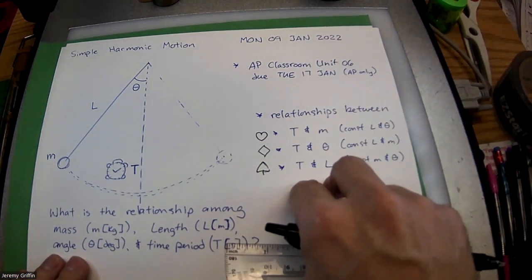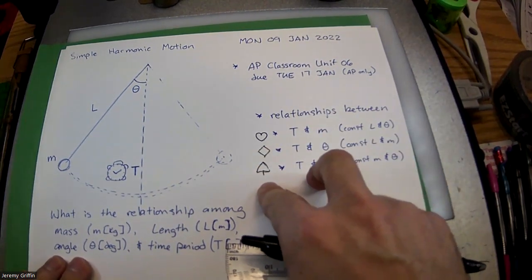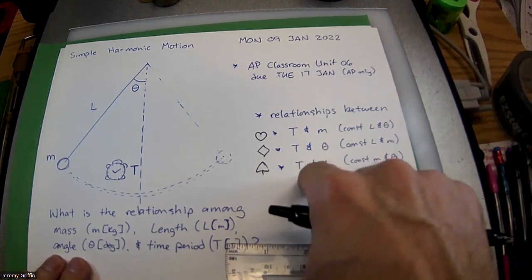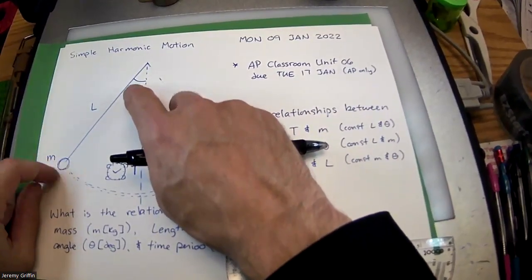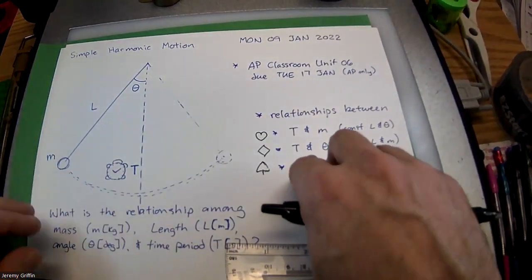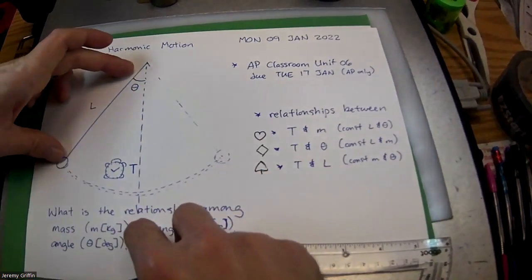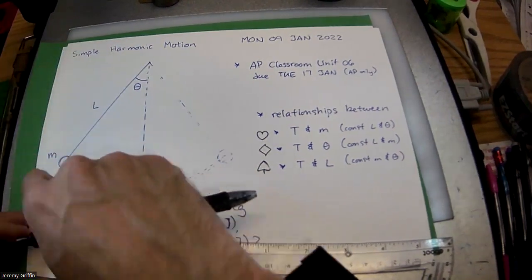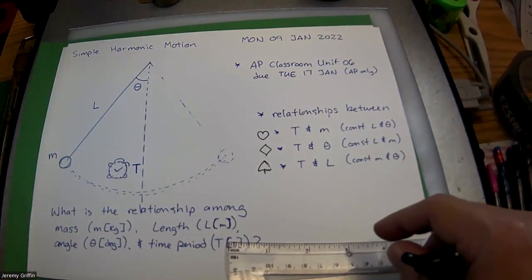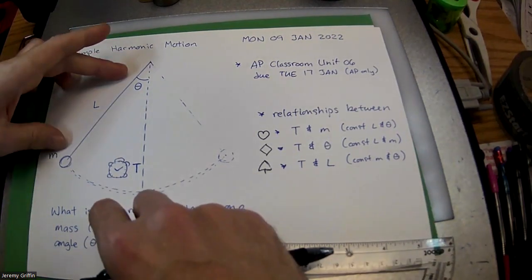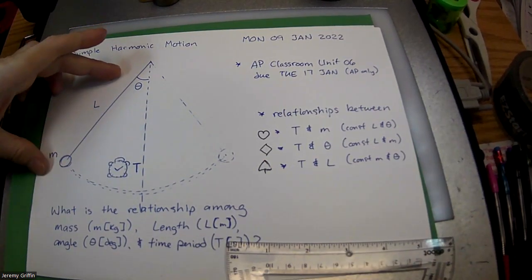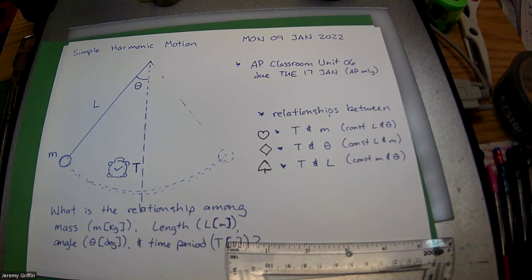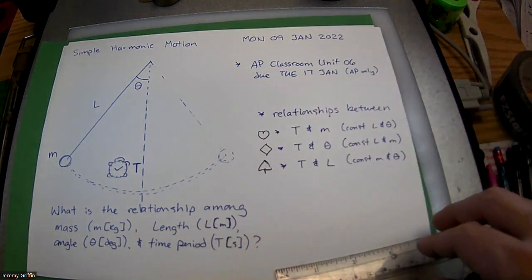The third experiment - if you have a spade on your desk, then I want you to test what happens if you change the length. Of course, if you change the length, you're keeping the mass and the angle controlled. Those will be the same over and over. Same three basic hypotheses. How many of you guys think if you make the length longer, it's going to take more time to swing back and forth? Who thinks if you make a longer pendulum, it'll take less time to swing back and forth? Does anybody say longer pendulum, same time? We're seeing different votes and different hypotheses for each of these three experiments.